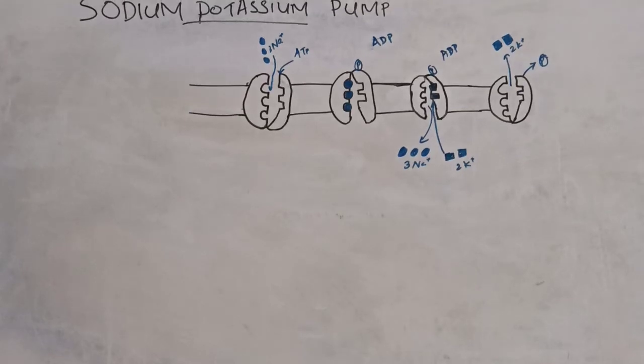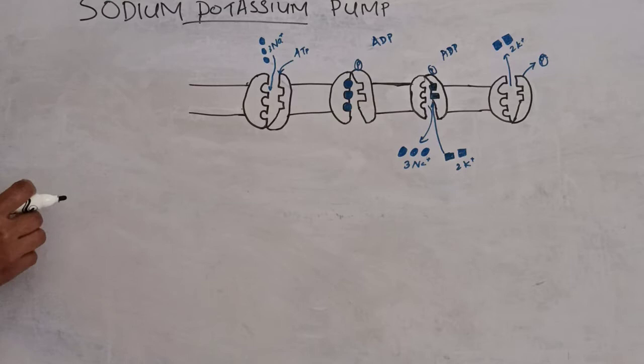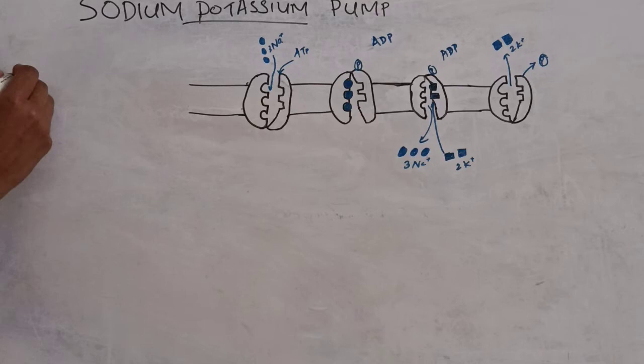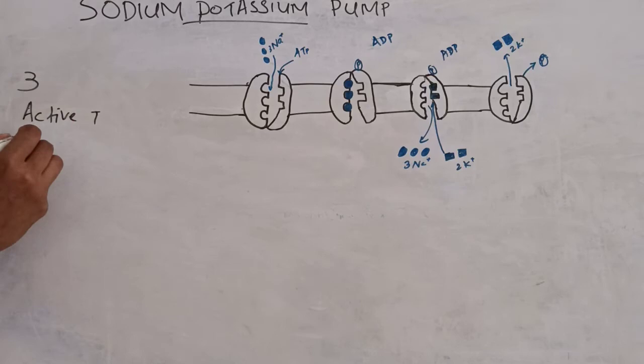Hello everyone, today we will discuss about the sodium-potassium pump. Transport of substances across the cell membrane is necessary to maintain all normal functioning of the cells. Transport across the cell membrane is divided into three main types: active transport, passive transport, and vesicular transport.